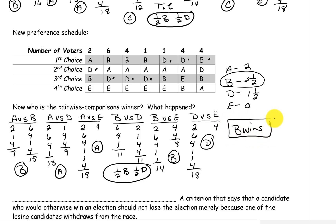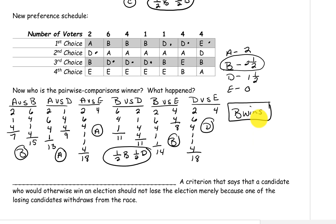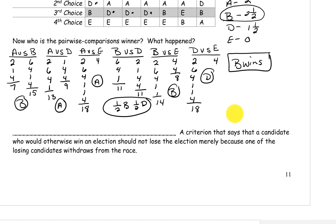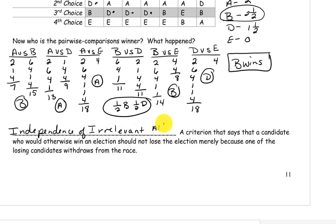So a candidate who did not win the original election drops out, and it causes the winner of the original election to no longer win. This is one of our criteria called the Independence of Irrelevant Alternatives. The criterion states that a candidate who would otherwise win an election should not lose merely because one of the losing candidates withdraws from the race.